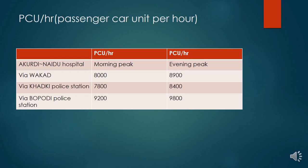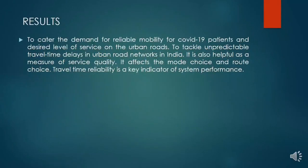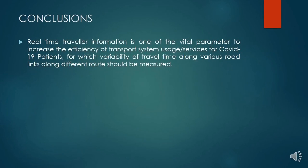We can see that for peak hours of a day, the PCU per hour values for the route through Khadki Police Station is least, which means this is the route you can opt for. The results from this project are clear that TTR is a key towards reliability and mobility of COVID patients to the hospital. From this we conclude that travel time information is a vital parameter to increase the efficiency of the transport system.